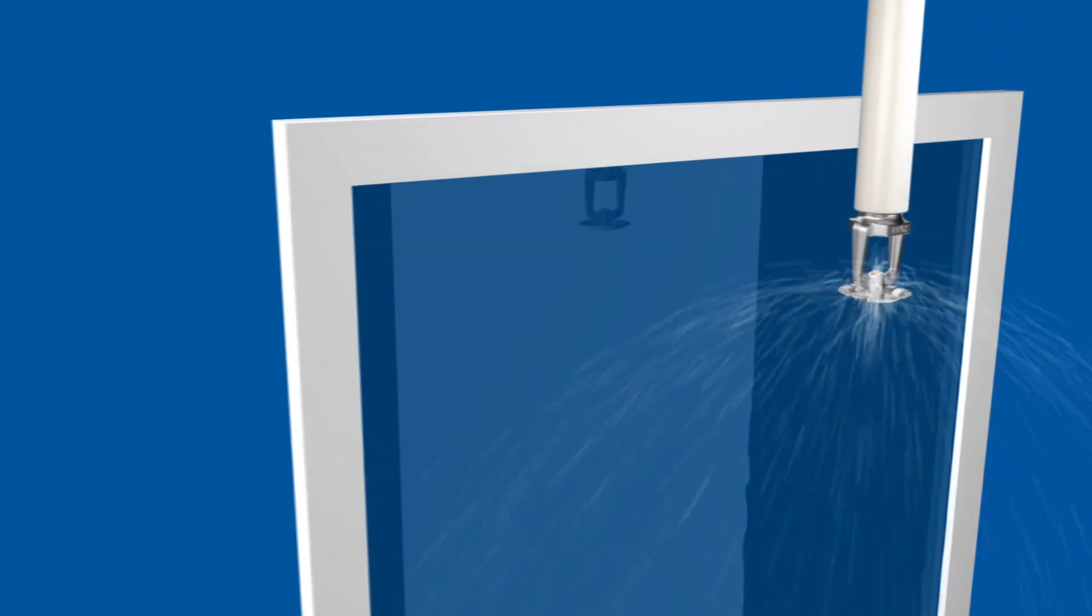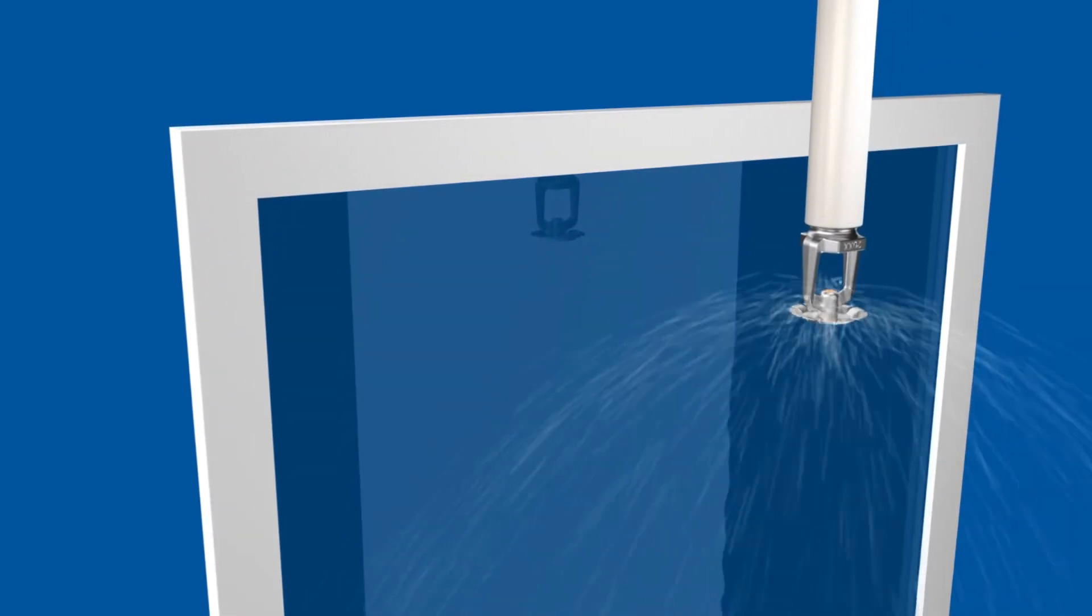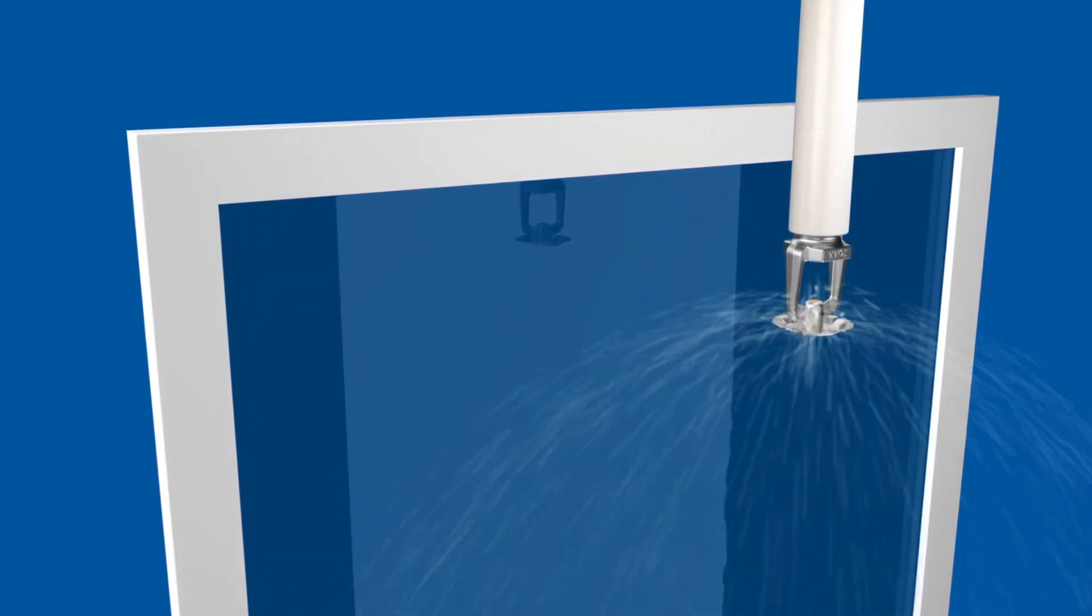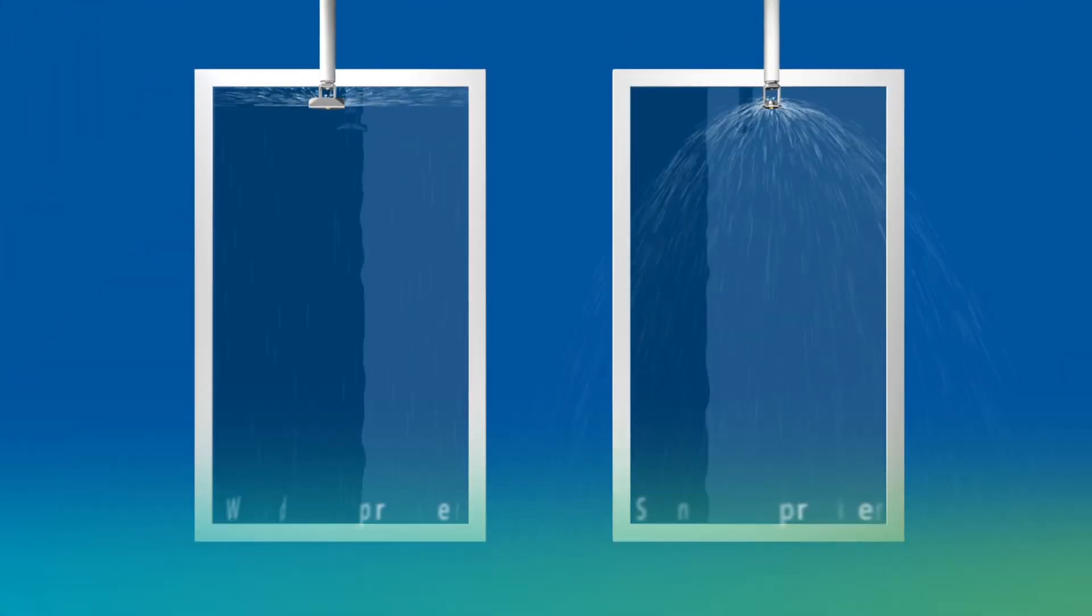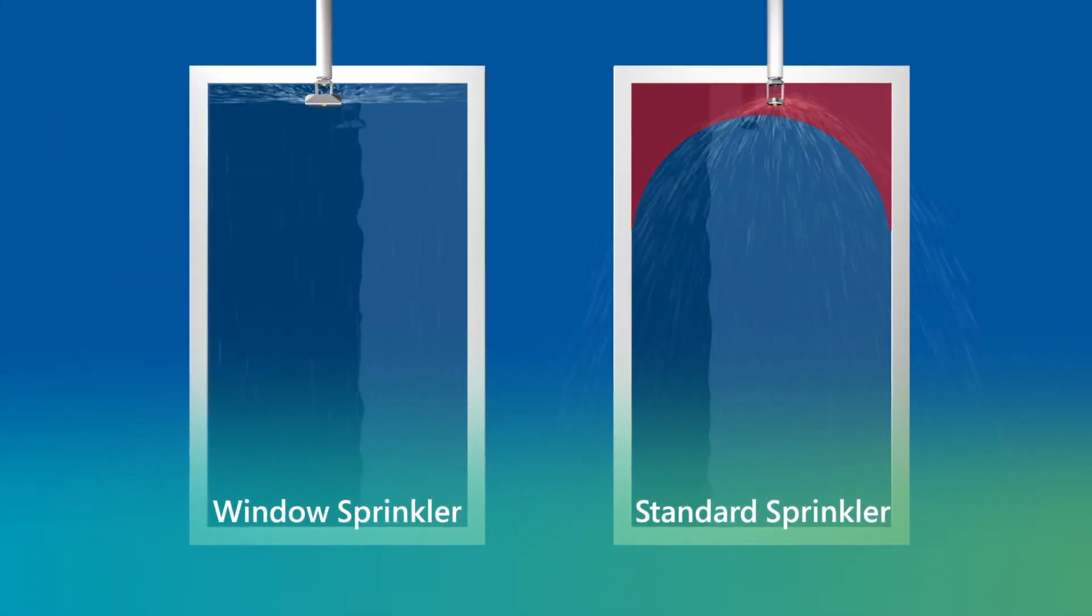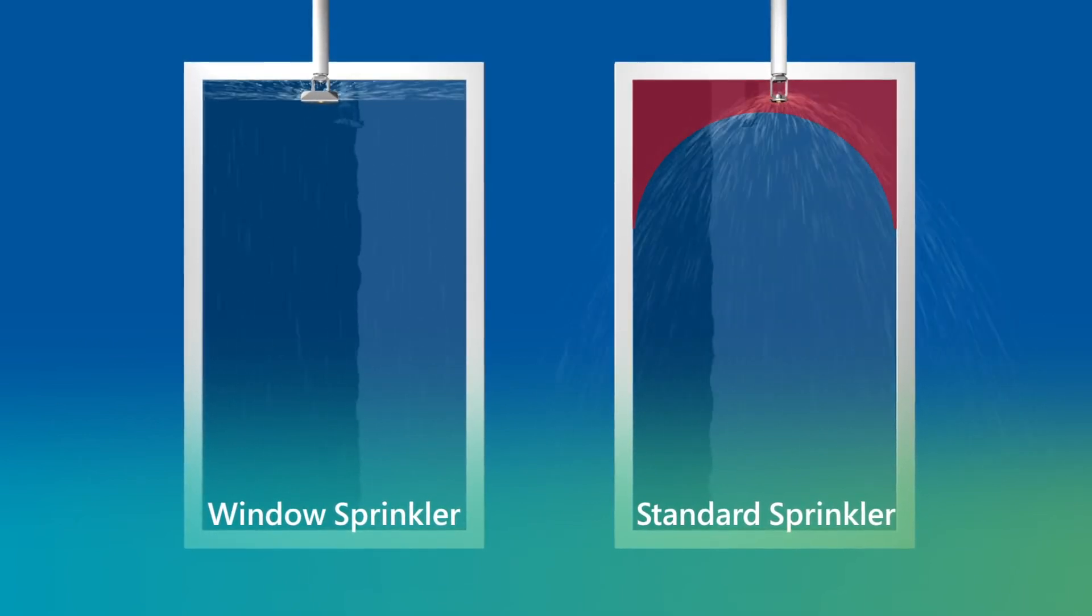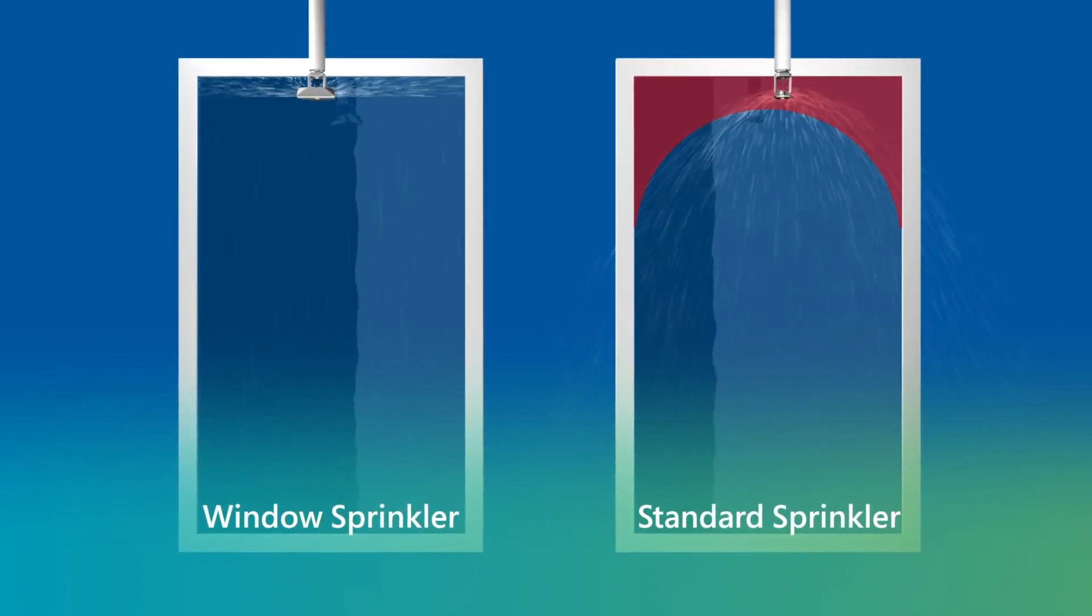Standard sprinklers, on the other hand, are designed to protect floors and wall areas. While they may wet windows, they are not designed to spray an even coat of water. This means they cannot provide protection equivalent to that of a two-hour fire rated wall assembly, whereas a window sprinkler is designed to do just that.